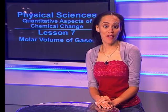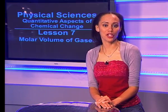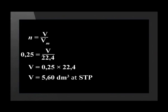Now we will use this value to calculate the volume of gas under conditions of standard temperature and pressure. Our standard formula is the number of moles is equal to the volume of the sample divided by the molar volume. We substitute the number of moles from our previous answer of 0.25 and the molar volume at STP, which is 22.4 decimetres cubed. We change the subject of the formula so that the volume is 0.25 multiplied by 22.4. This gives us a final answer of 5.60 cubic decimetres at STP.